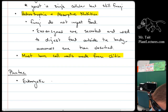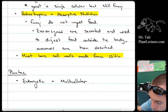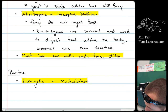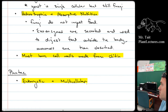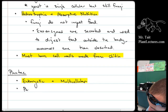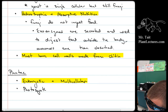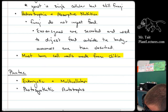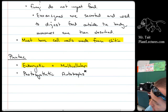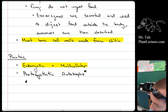Plants have to be eukaryotic and multicellular — everybody in this grouping follows those rules. They also have to be photosynthetic autotrophs, with an asterisk: they had to have been photosynthetic autotrophs at some point during their evolution.